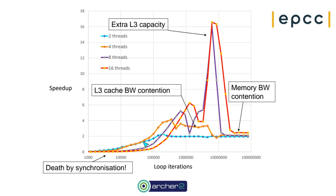For two threads, once past the synchronization overhead threshold, the speed up is a factor of two — which is what you'd expect — and stays there no matter how big the array gets. Going to four threads, the speed up gradually increases and does hit four at one point, but then starts to decrease a bit.